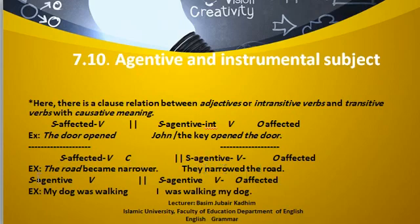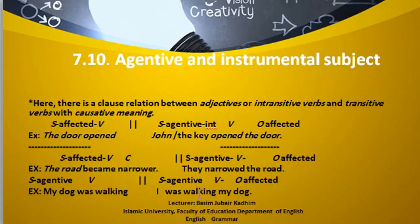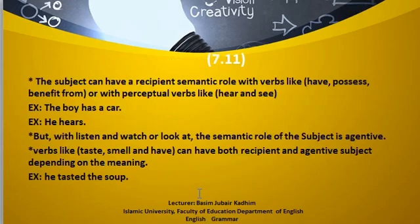For example, 'my dog was walking.' My dog is the subject which is agentive, and 'was walking' is the verb. Here, the relationship is with subject agentive, verb, and object affected as well. 'I was walking my dog' — which means I was taking my dog on a walk.